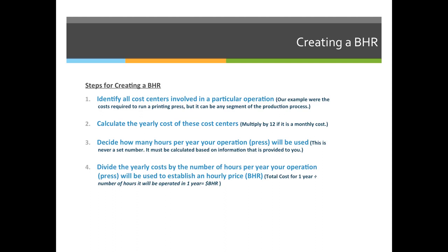Step two: you must calculate the yearly cost of these cost centers. If it's a monthly cost, you multiply by twelve. If you pay it every six months, you multiply by two. You figure out the total cost for the entire year to have or to use whatever it happens to be — a computer, a chair, a table, whatever it is.